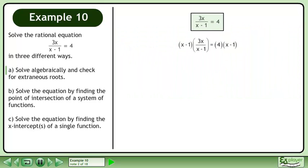Multiply both sides by x-1 to eliminate the denominator. This gives us 3x equals 4x-4. Subtract 4x from each side of the equation to get negative x equals negative 4. Divide both sides by negative 1 to get x equals 4.